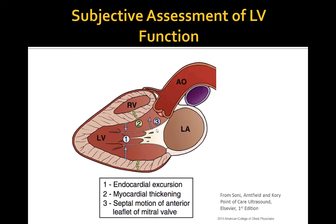Normally, the anterior leaflet should come closer to the interventricular septum because lots of blood is moving through the mitral valve during diastole. If the leaflet approximates the septum, the function is good. If the distance between the leaflet and the septum is large, the LV function is likely decreased. It is important to attempt the evaluation of LV function in two different views to avoid mistakes in interpretation.